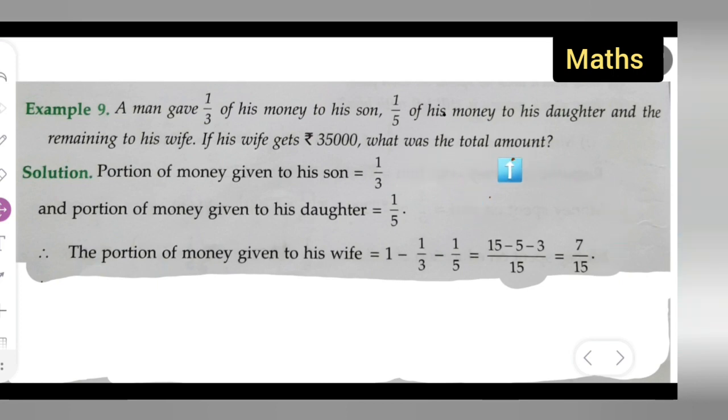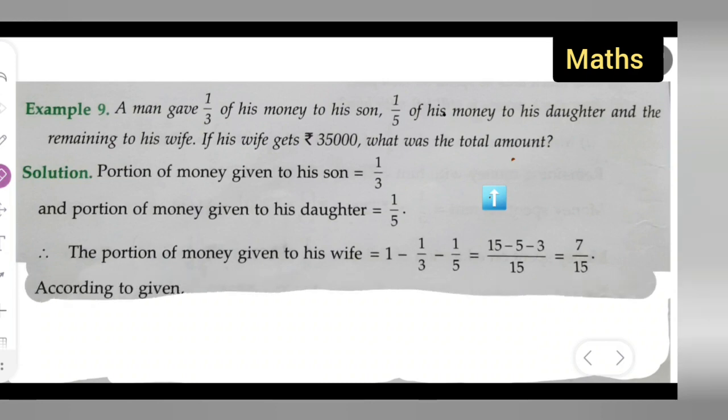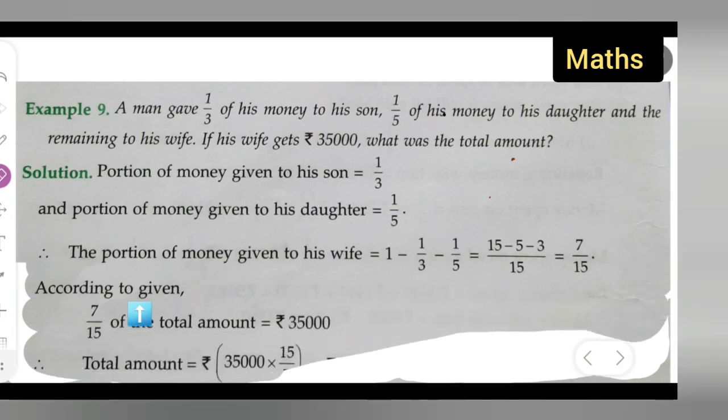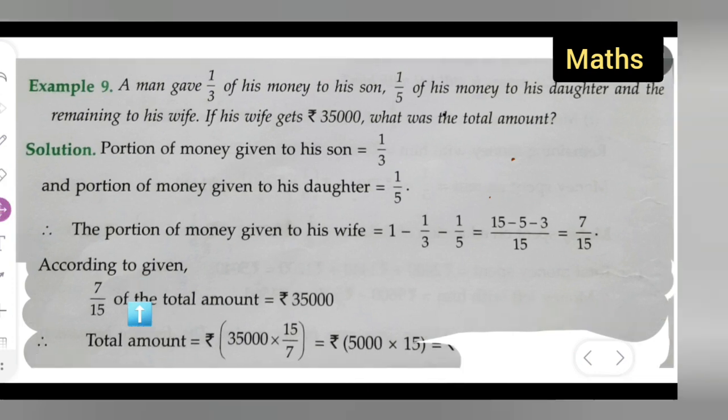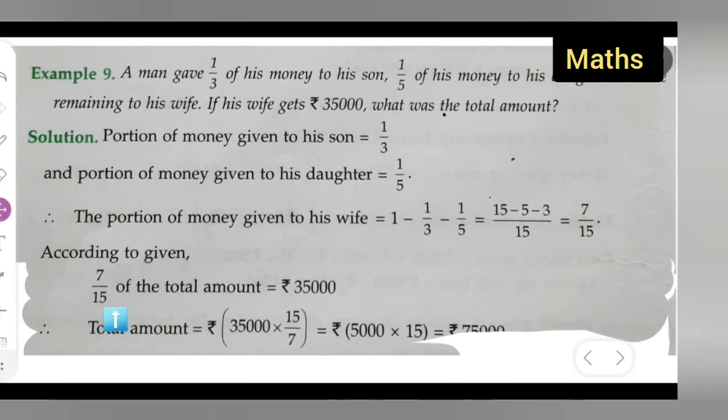Next, we need to find the total amount. According to the given information, 7/15 of the total amount is equal to ₹35,000. So the total amount equals ₹35,000 multiplied by 15/7. This is the reciprocal - we are dividing ₹35,000 by 7/15, so it becomes the reciprocal 15/7.